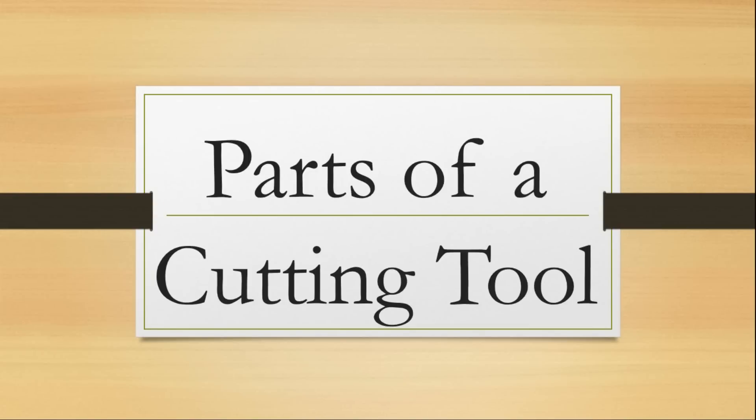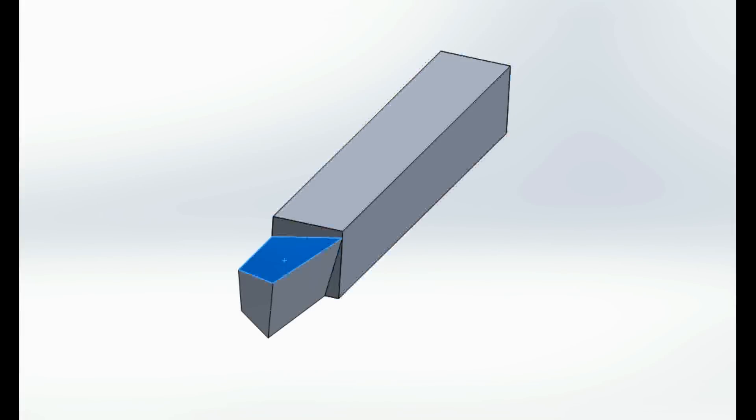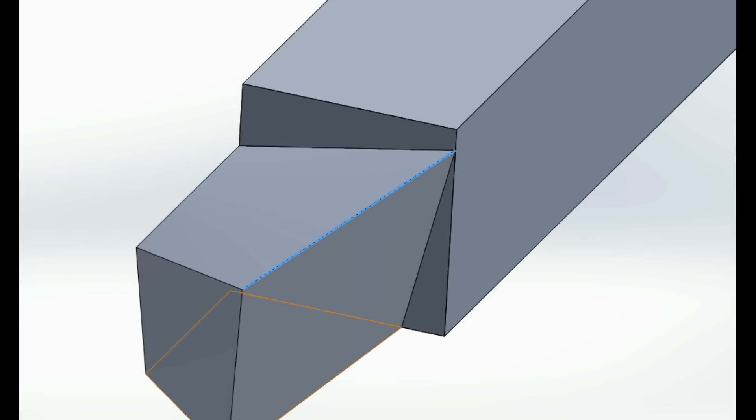With reference to a lathe, this part is the shank, which is held at the tool post. This face is the rake face over which the chip flows. This is the principal cutting edge which does the cutting job.